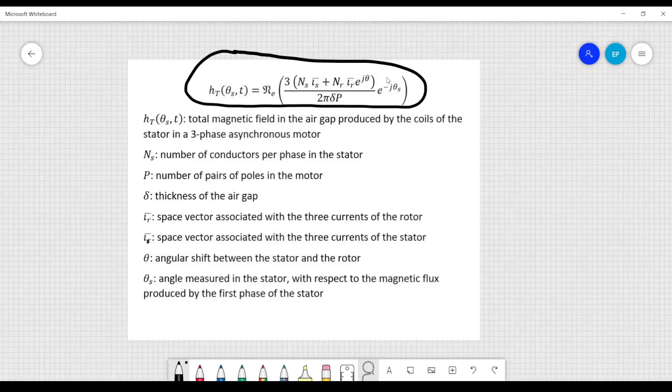We can see that this field depends on different parameters. The number of conductors per phase in the stator, the number of conductors per phase in the rotor, the currents that we have in the rotor and in the stator, and these currents here are represented by means of vectors.